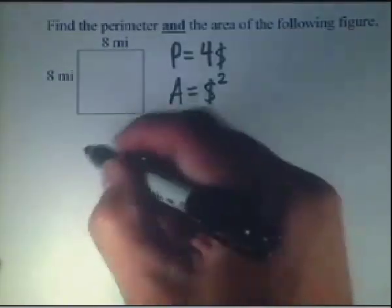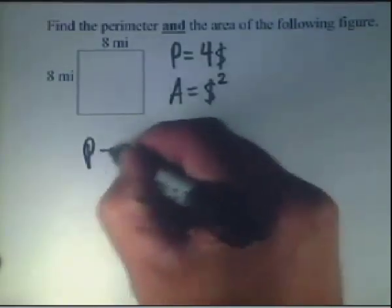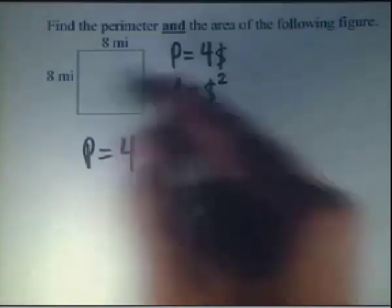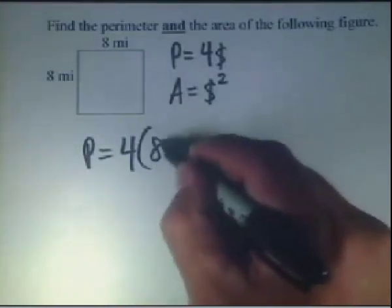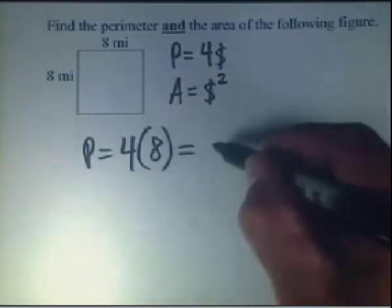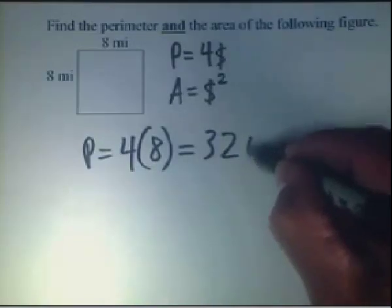To find the perimeter, P, again it's a lineal measurement. We're going to take 4 times S, which represents a side, and that is 8. So from that we have 32 miles.